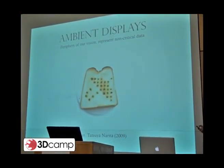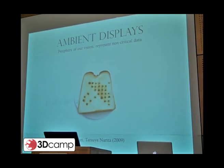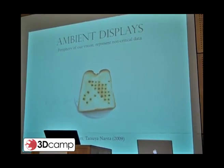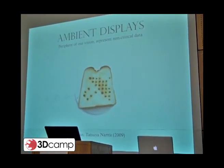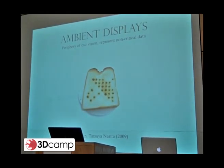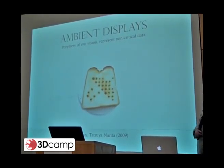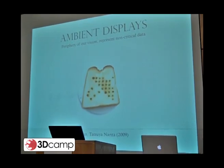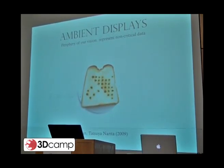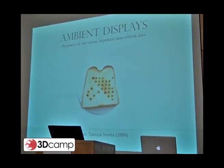This is an example of an ambient display — it's a toaster that burns the weather conditions for the day into your bread. You don't have to check the weather; you can do two tasks at one time. But again, it's non-critical information.